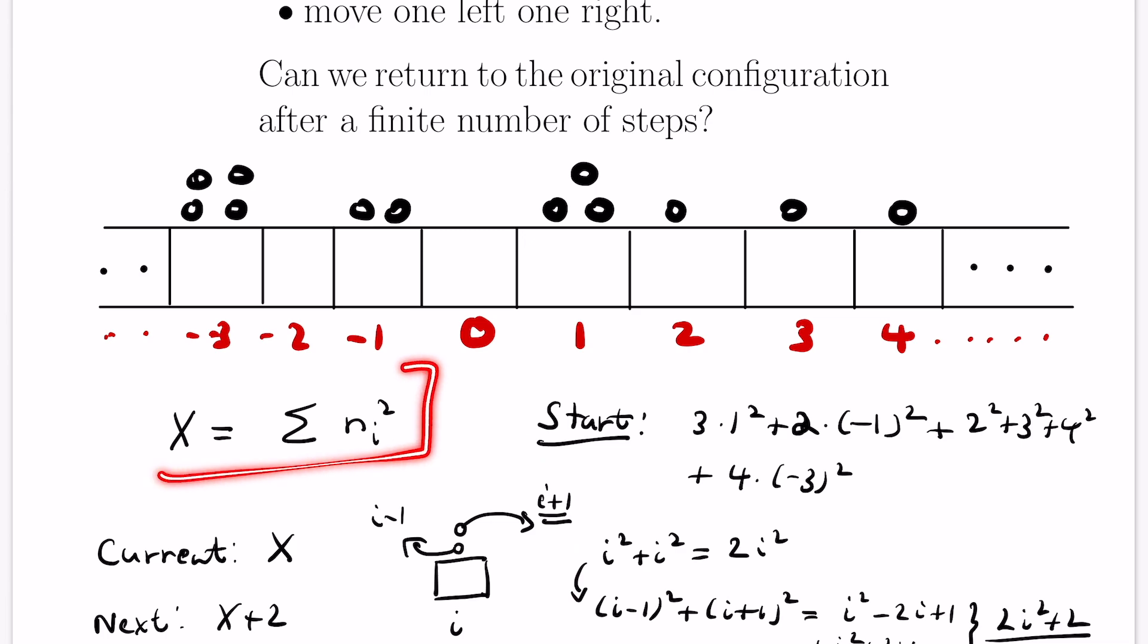So no matter what, our monovariant, the sum of the squares of the weights of our stones, is going to be changing by 2 at each step in the positive direction. It's increasing by 2 at each step. So if we go back to our original question, can we return to the original configuration after a finite number of steps? Well if we could, then the weight at the beginning would be the same as the weight at the end. But that's impossible because every time we move two stones, the weight increases by 2. So this is not possible. This is a really interesting and creative type of monovariant. The intuition comes from thinking about the spread of points and finding a way to account for that using distance. So a few examples of cool problems that use things that don't change or things that can change but are controllable using one particular statistic.